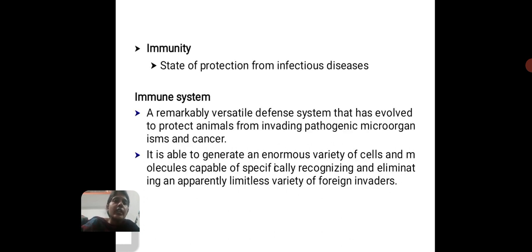Next, Immunity — it is the state of protection from infectious disease. Next, Immune system — it is a remarkably versatile defense system that has evolved to protect animals from invading pathogenic microorganisms and cancer. It is able to generate an enormous variety of cells and molecules capable of specifically recognizing and eliminating an apparently limitless variety of foreign invaders.